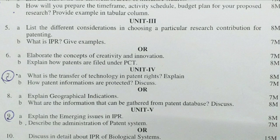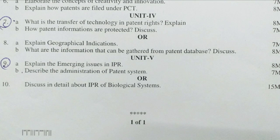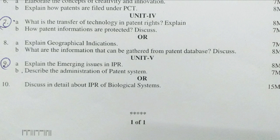Unit 4 — Seventh question A bit: What is the transfer of technology in patent rights? Explain (8 marks). B bit: How is patent information protected? Discuss (7 marks). Eighth question A bit: Explain geographical indications (7 marks). B bit: What information can be gathered from the patent database? Discuss (8 marks).